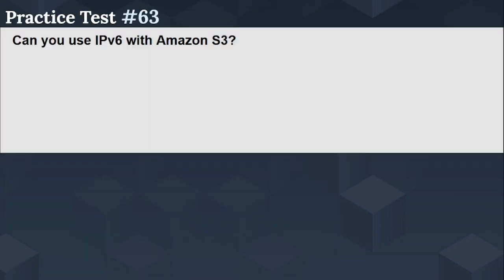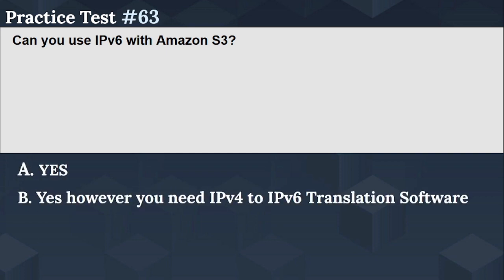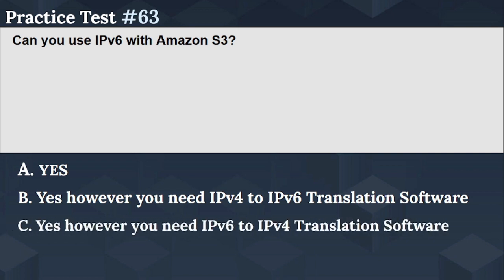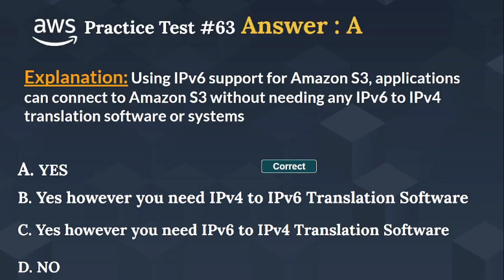The next question is: Can you use IPv6 with Amazon S3? Option A: Yes. Option B: Yes, however you need IPv4 to IPv6 translation software. Option C: Yes, however you need IPv6 to IPv4 translation software. Option D: No. The right answer is Option A — Yes. Using IPv6 support for Amazon S3, applications can connect to Amazon S3 without needing any IPv6 to IPv4 translation software or systems.